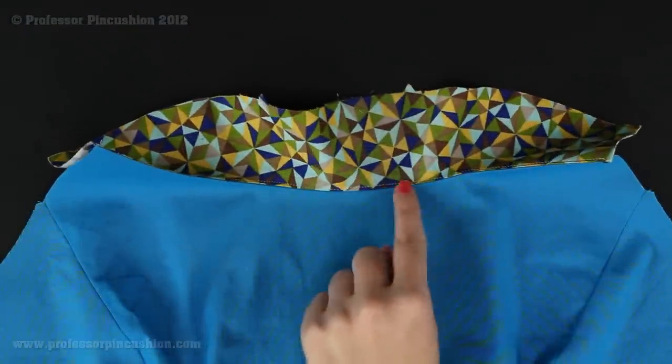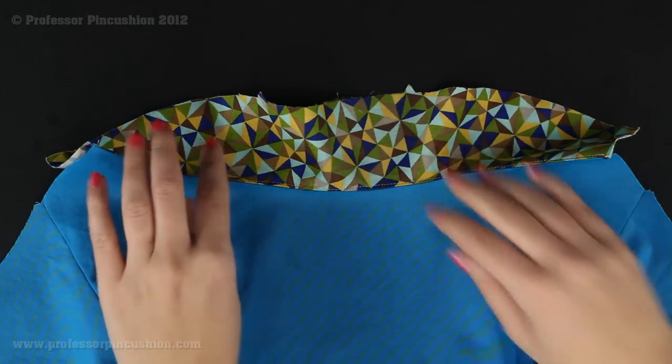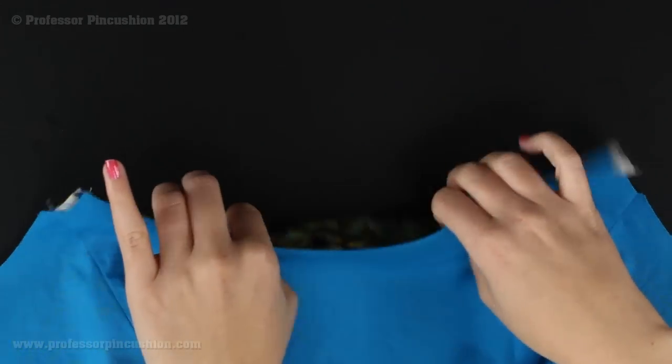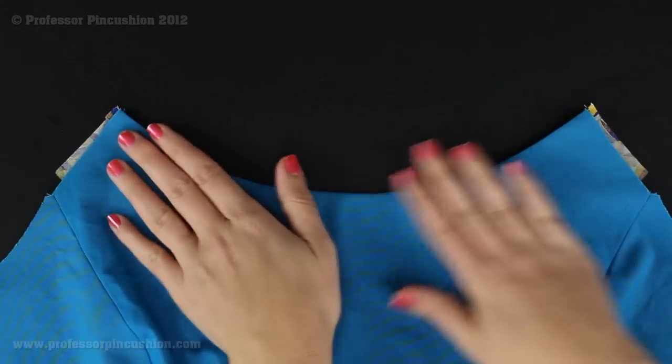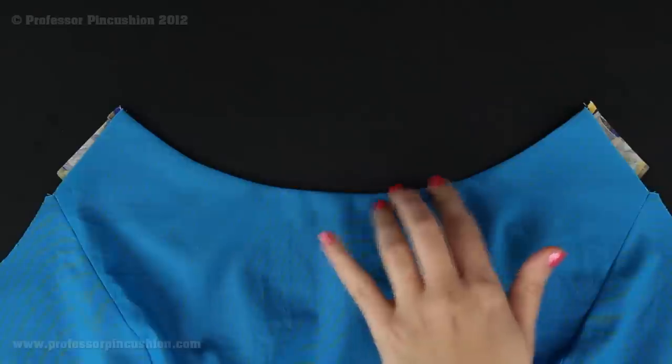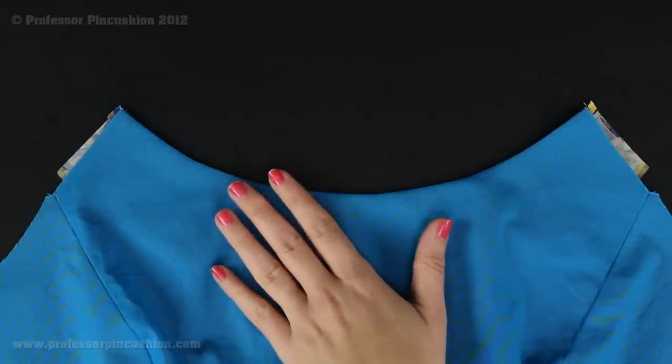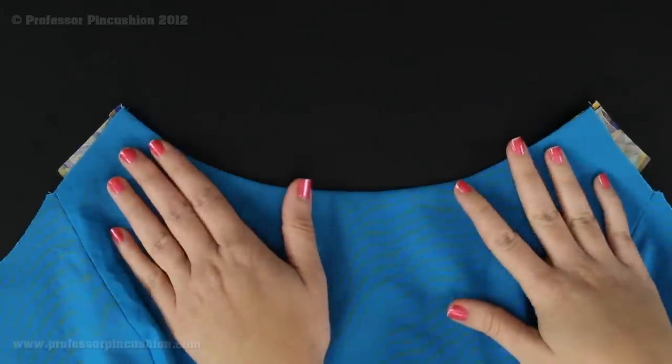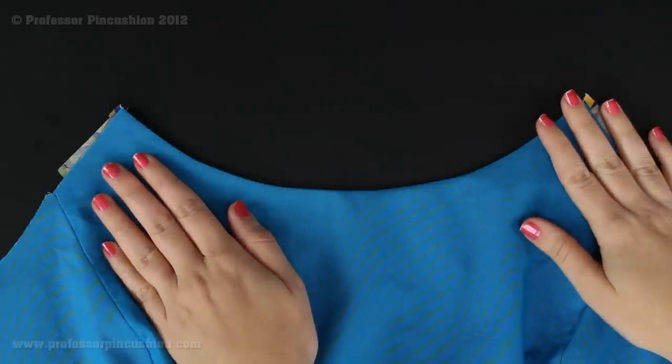After we have our understitch done, what you're going to do is take your facing and put it to the wrong side of your garment and then press. So we have a nice, clean, folded edge up here and we no longer have to worry about the raw edge of our garment. At this point, the understitch is done and you can move on to the next step of completing your project.